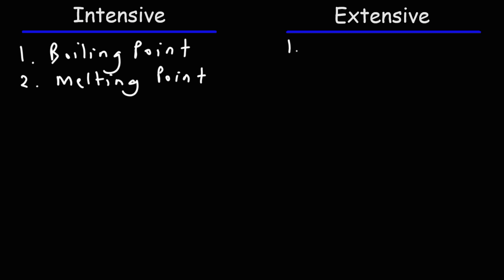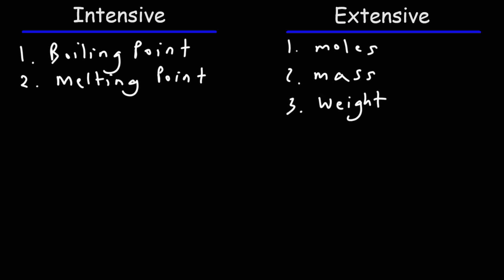Now let's look at some extensive properties. The number of moles of substance that you have is an extensive property because that depends on the quantity of matter that you have. The same is true for mass — the more that you have of something, the more mass you have, so mass is an extensive property. Weight is also an extensive property because as you increase the mass of a substance, the weight is going to increase. Weight is a force, but mass represents the quantity of matter.